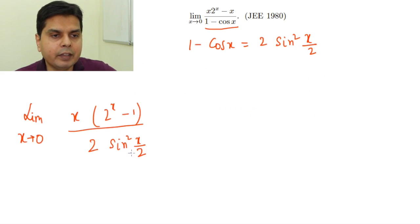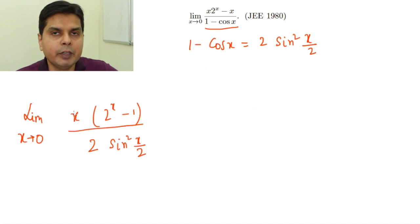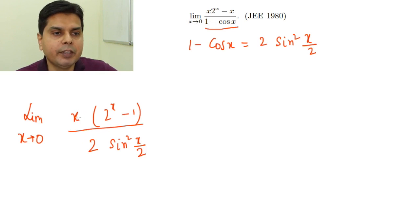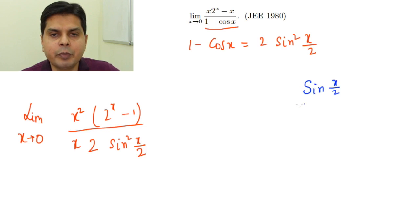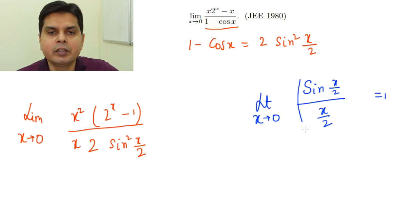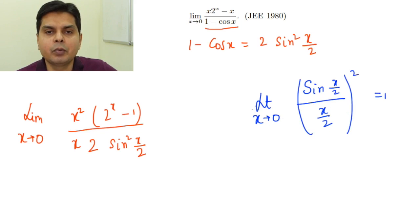To handle sin²(x/2) and this x, I will multiply both the numerator and denominator by x. When I do that, I get x² in the denominator and an additional x in the numerator. After this step, I will use the formula: the limit as x tends to 0 of sin(x/2) divided by (x/2) equals 1, and therefore the square of this expression also tends to 1.